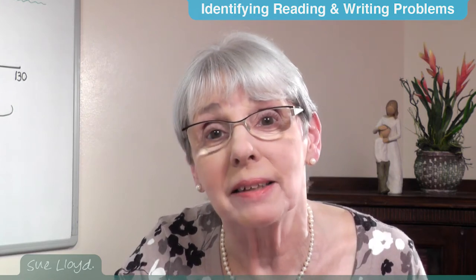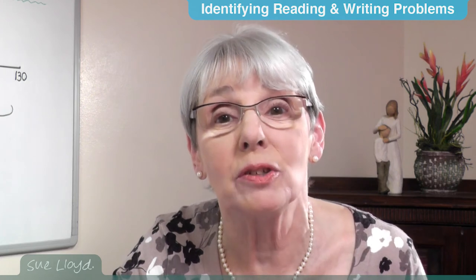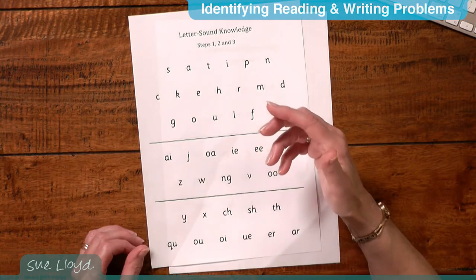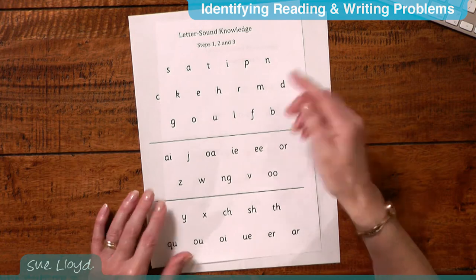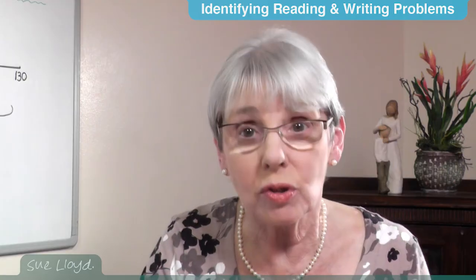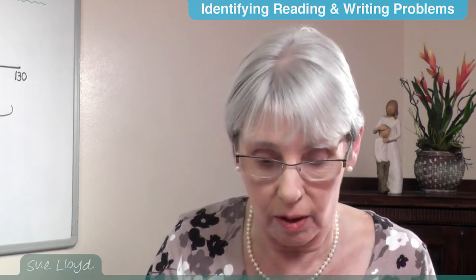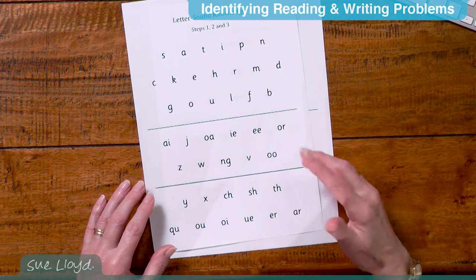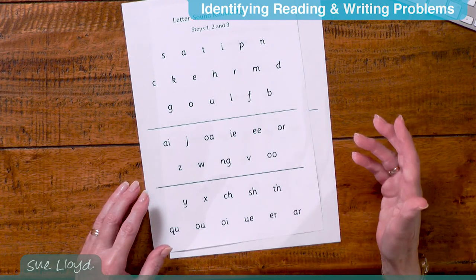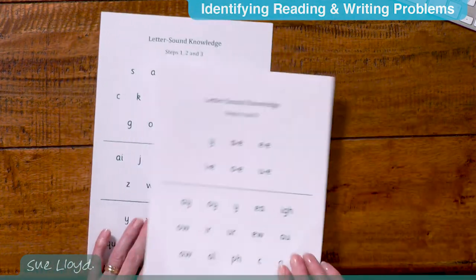Although there are some children who muddle up the letter names and the letter sounds, and that will need to be sorted out in the intervention sessions, generally speaking older children cope well with these single letter sounds. Usually the serious gaps start to show with the digraphs in these steps. Make a record of the letter sounds that are not known and continue with assessing the alternative spellings of the letter sounds.